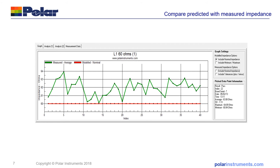Looking more closely at the analysis graph, you can see that in the graph settings we can include the nominal model impedance. We could also include the minimum and maximum model impedance and the measured impedance, so you can select these lines on and off — nominal impedance, measured, and tolerances plus and minus on the measured impedance. This lets you look very comprehensively at what you expected and what you measured.